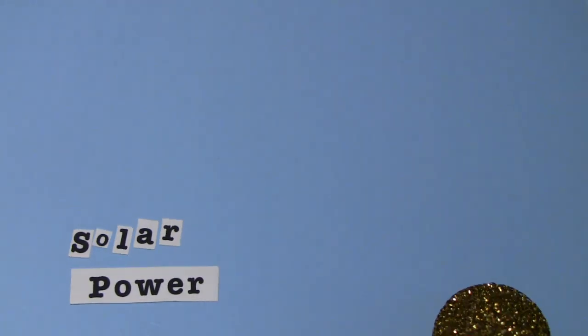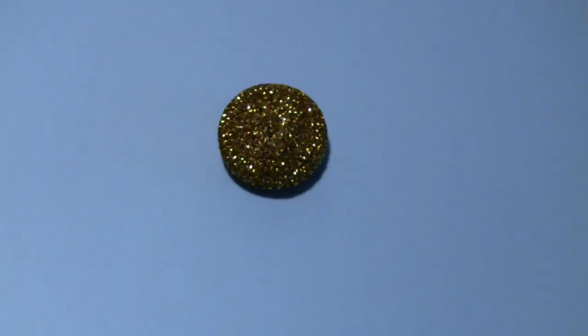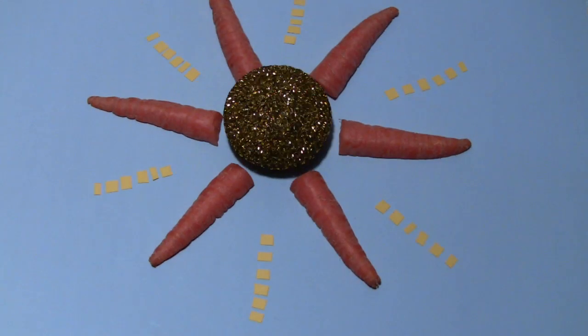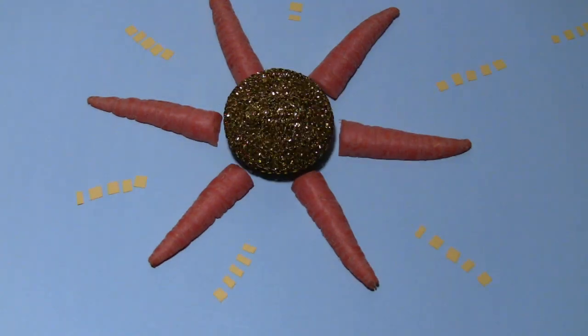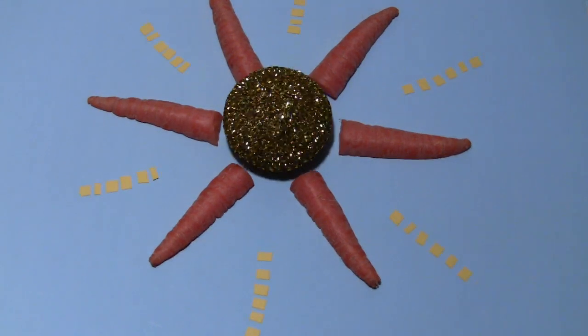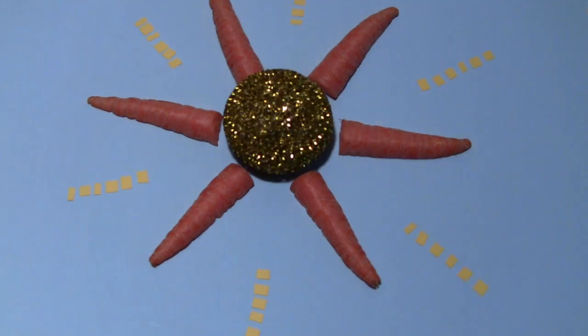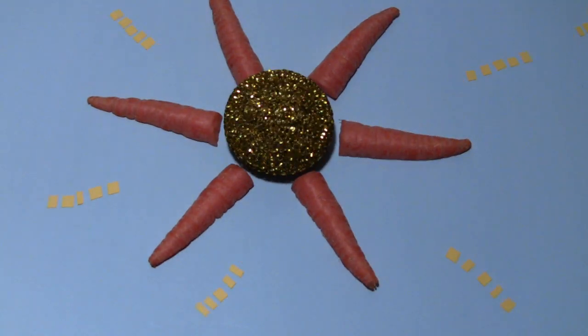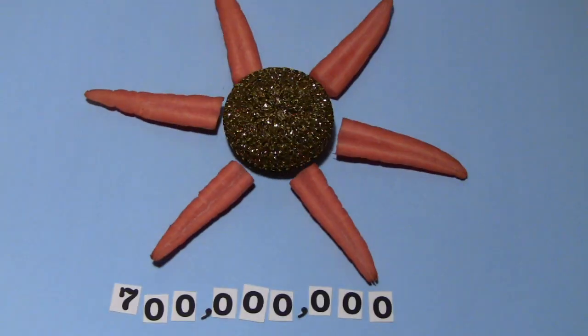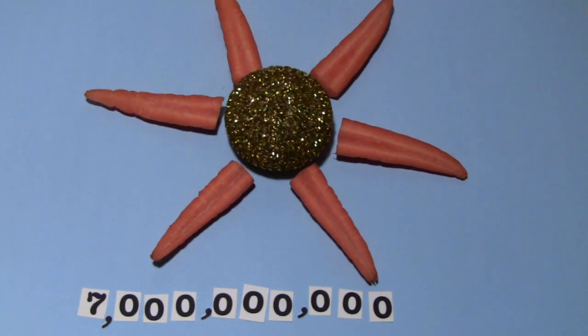Solar power converts sunlight into electricity. The sun has been emitting light energy for billions of years, and it will continue to naturally replenish that energy for an estimated 7 billion years. For this reason, solar is considered a renewable energy source.